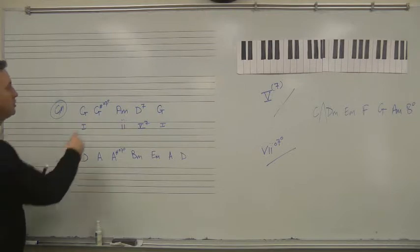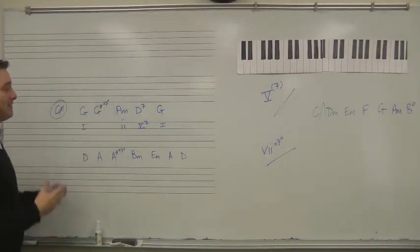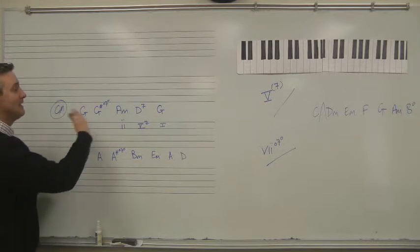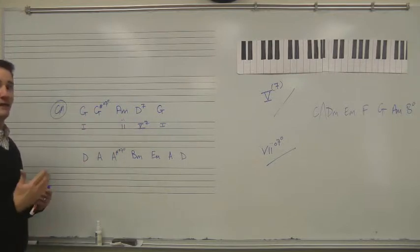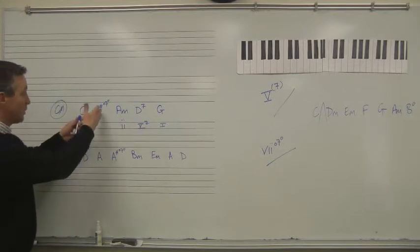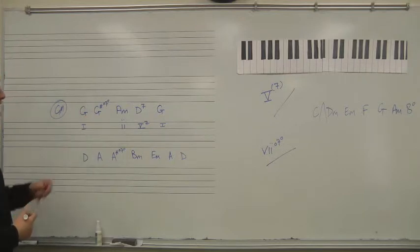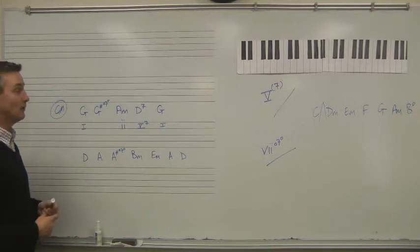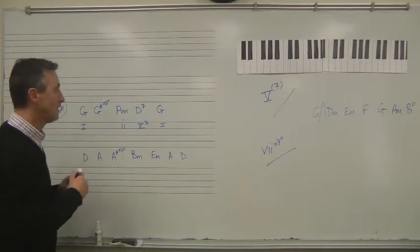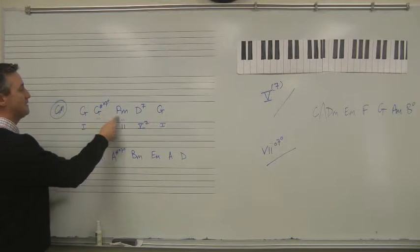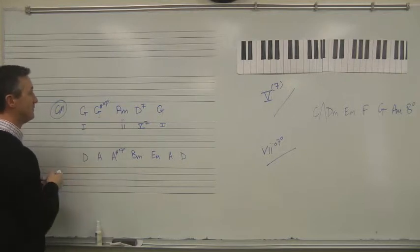As soon as we see G sharp, fully diminished 7, if it's not the VII chord, the only diminished chord we have in major is the VII chord. And if this is not the VII chord, if it is not, in other words, in G major, if it's not an F sharp diminished 7 chord, then there's something chromatically going on. So, we start to look for ourselves, is there a relationship between these two? Well, there is.